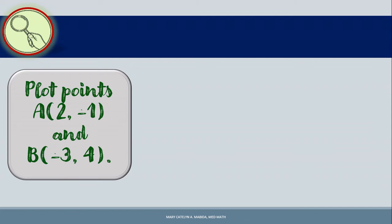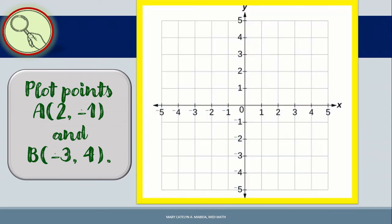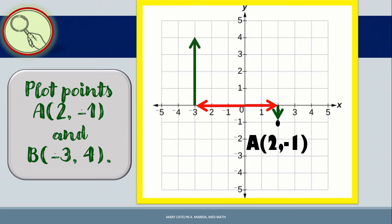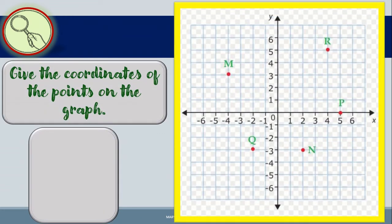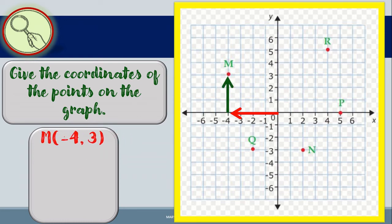Let's plot points A and B on a rectangular coordinate system. Starting from the origin, move 2 units to the right and 1 unit down — that will be your point A with coordinates (2, −1). For point B, that will be 3 units from the origin to the left and 4 units up — that is your point B with coordinates (−3, 4). Let's have other examples. Give the coordinates of the points on the graph. Let's start with point M: 4 units to the left from the origin and 3 units up. Point M has coordinates (−4, 3).